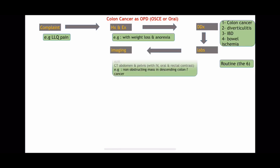We go to imaging. We would request an upright chest X-ray and abdominal X-ray — mostly they would show nothing in this scenario. Then we need a CT abdomen and pelvis with IV, oral, and rectal contrast. For example, we have an unobstructed mass in the descending colon, query cancer as reported by the radiologist. It is very important to say CT abdomen and pelvis — not only CT abdomen — and to specify with IV, oral, and rectal contrast, as these points are considered.